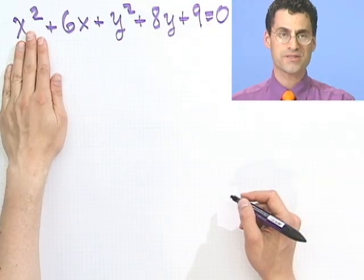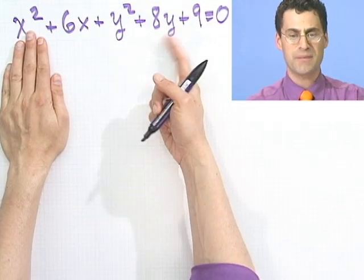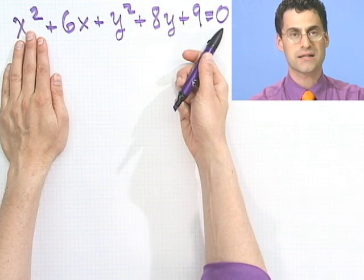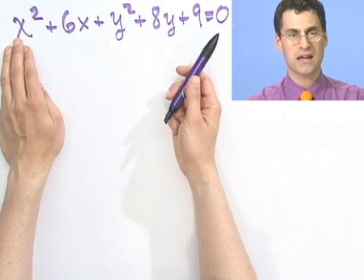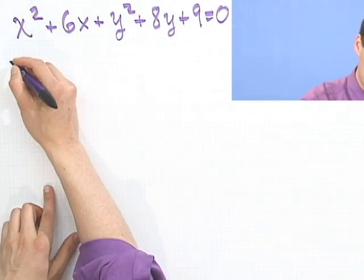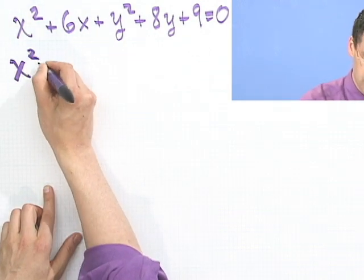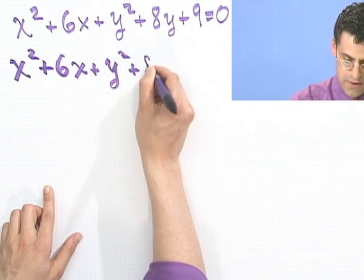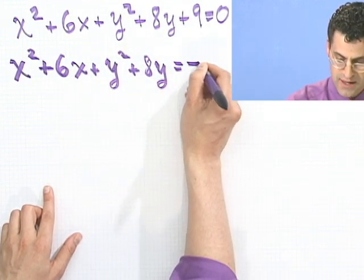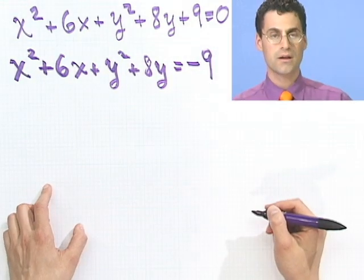The first thing I want to do is keep all the variables on the left, take any constants that may appear, and move them to the right. OK? All variables to the left, constants stay to the right. So in this case, I'd write the following, x squared plus 6x plus y squared plus 8y equals minus 9.